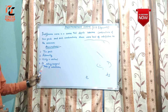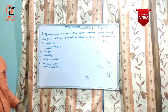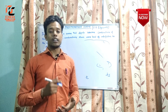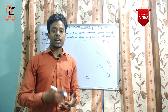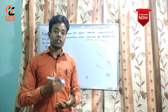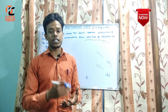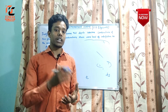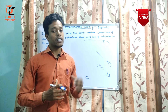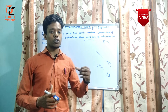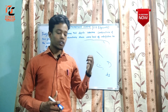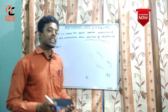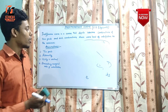The fourth assumption is diminishing marginal rate of substitution. It means that when a consumer wants to consume an extra unit of one commodity, he has to sacrifice some units of another commodity.